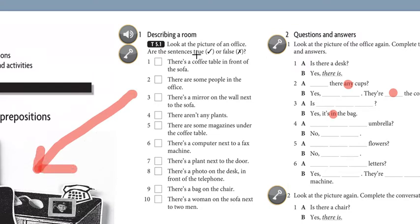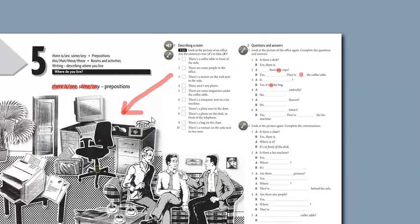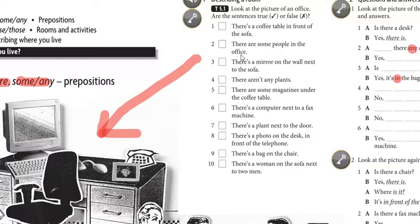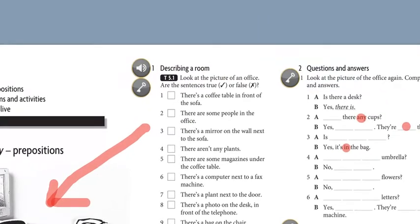Are these sentences true or false? If they are true, put a tick mark. If they are false, put a cross mark here, 1 to 10 sentences. Okay, like this one, the first one. There is a coffee table in front of the sofa. Now, how do we know that? We go to the picture, and we see the sofa and the coffee table in front of that. So, the sentence is correct, and we put a tick mark in number 1.